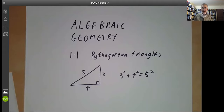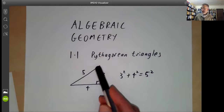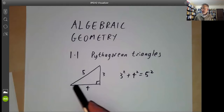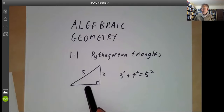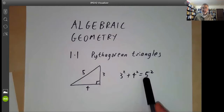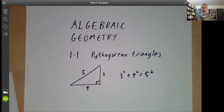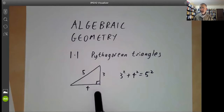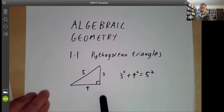I will start by discussing several examples. The first example is the problem of Pythagorean triangles. As everybody knows, right-angled triangles satisfy Pythagoras' theorem, where the sum of the squares of the sides is the square of the hypotenuse. We have the usual 3, 4, 5 triangle as the simplest example. So this leads to the following problem: how can we classify all Pythagorean triangles?